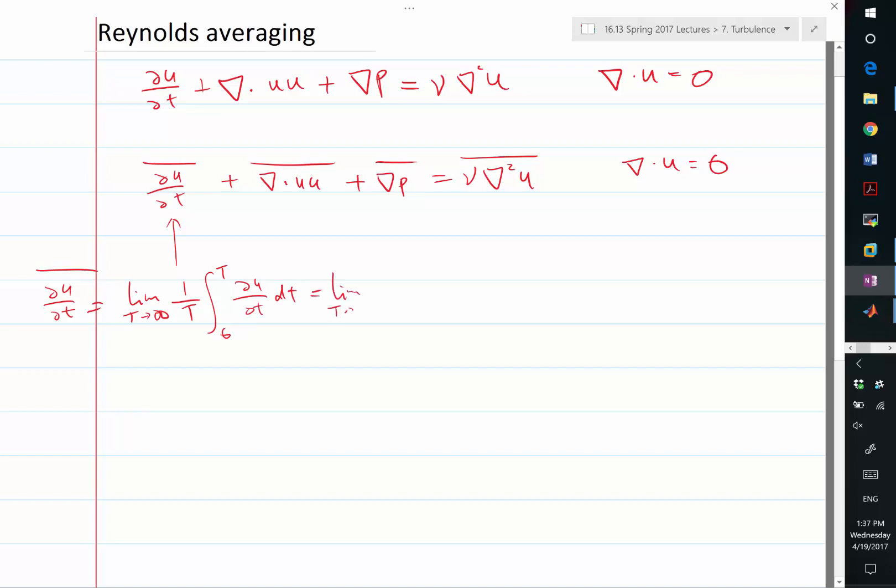That is limit of t goes to infinity ut minus u0 over big T. So if the solution of the Navier-Stokes equation doesn't really blow up, most of the case we don't. And t goes to infinity, this is equal to 0. So with time averaging, the time derivative term is gone completely.